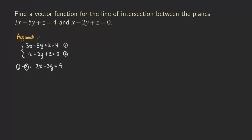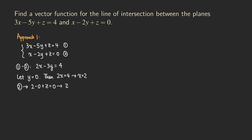All we need to do is start plugging in some numbers. If we let y = 0, then we have 2x = 4, so x = 2. Once we have x = 2 and y = 0, we can plug back into one of the equations and solve for z. Plugging into equation 2: 2 − 0 + z = 0, so z = −2.